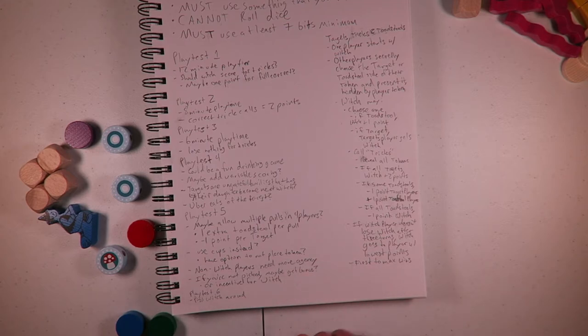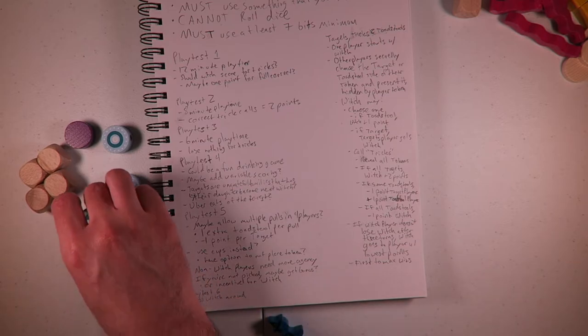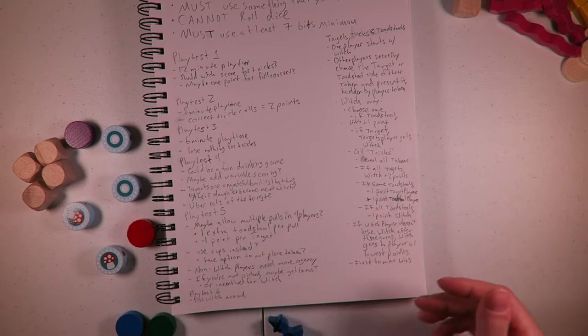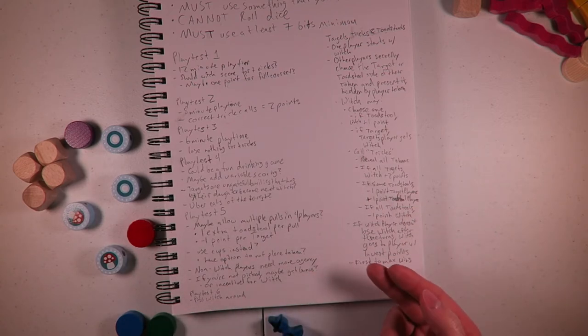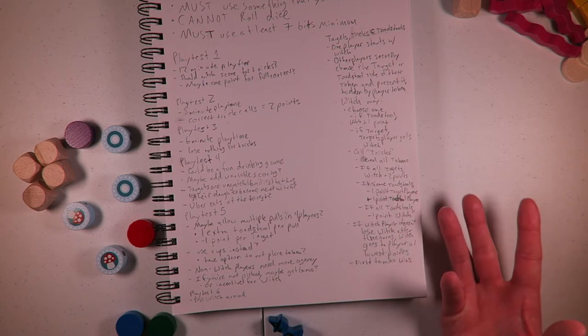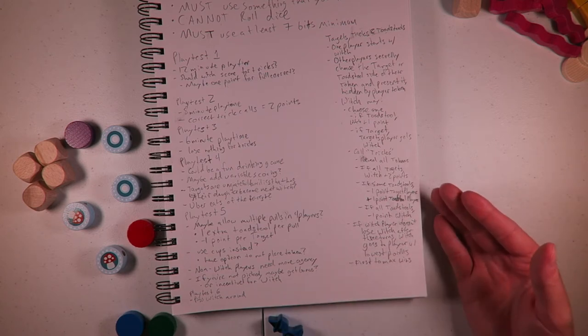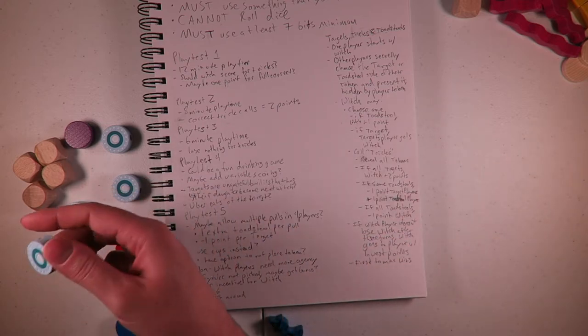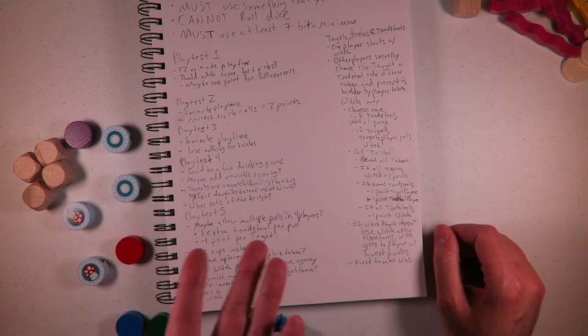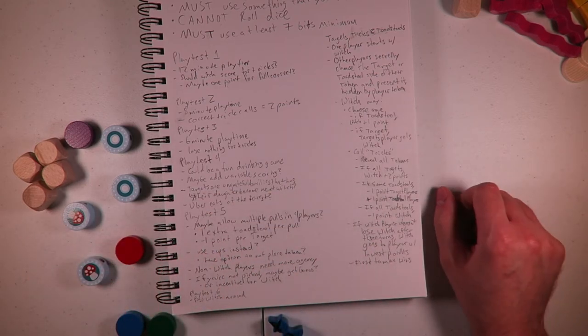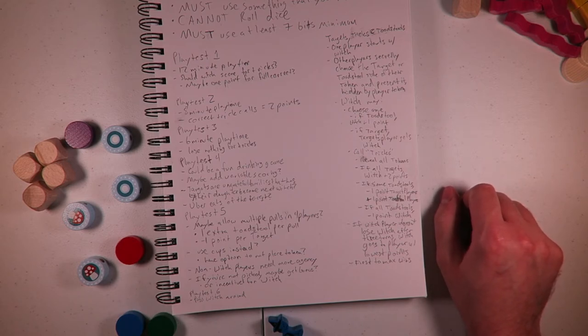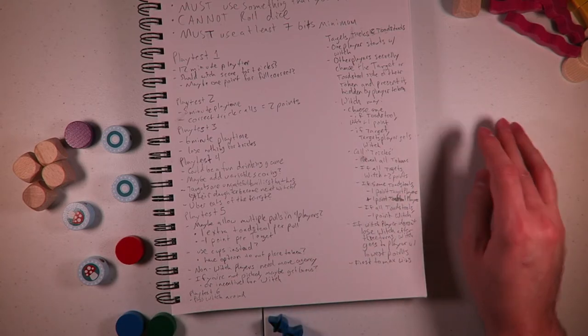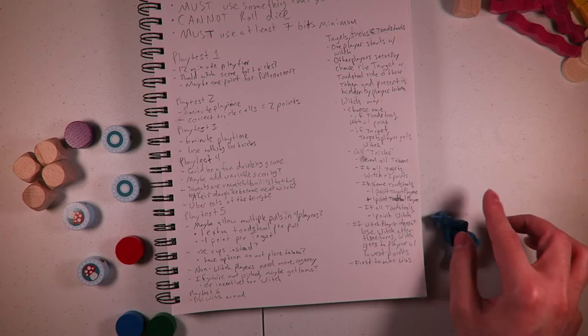Playtest five, I got a lot of info because I was the one with four players. In four players, there was a point where the witch didn't go to one guy the entire game and it was really hard to get a bunch of points. So a drug for a long time. So they're saying maybe allow multiple pulls in four players. They also suggested using cups and then having an option where you put out your cup with no token underneath. Non-witch players need more agency. I've gotten this multiple times where when you're the witch, you're making all these fun decisions, but then everyone else is just like, which one do I do?